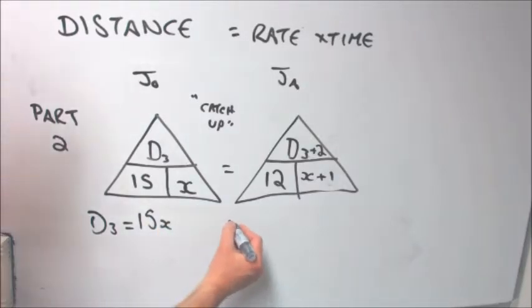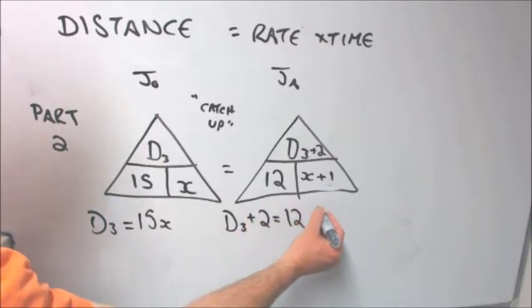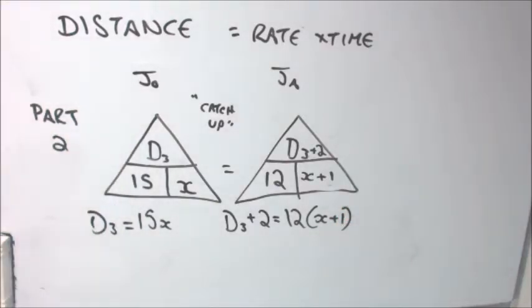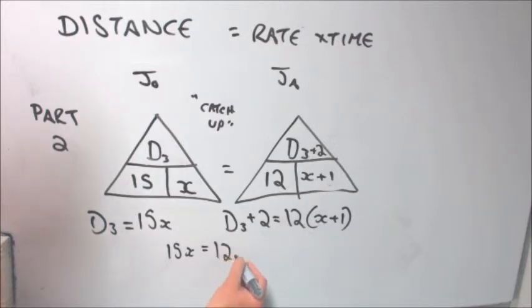So, without going any further, let's just get our equations clearly written. So we're using D3. In other words, this particular distance traveled in part two by John is 15X where 15 is rate and X is the time traveled. We're using that as a reference. So we can immediately say D3 plus two. In other words, Jacob's traveling two miles further is Jacob's speed multiplied by X plus one, the time that Jacob's traveling, which is in part two John's time of traveling plus one. We can immediately substitute D3 is 15X.